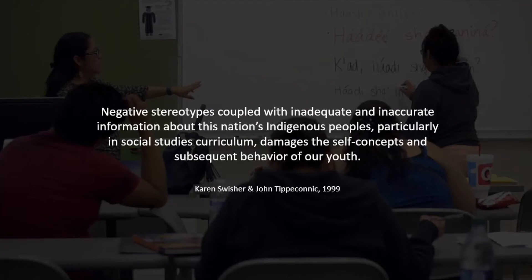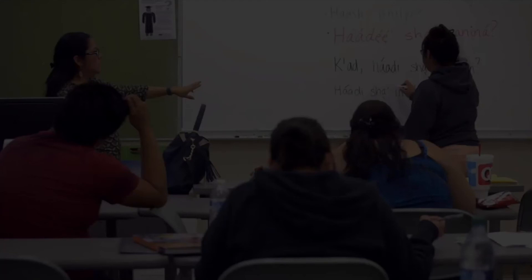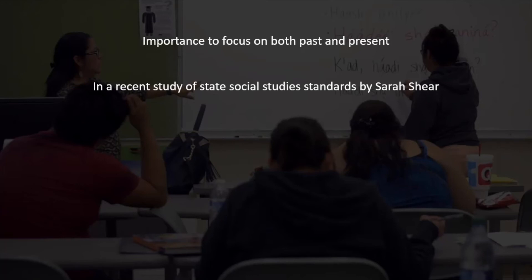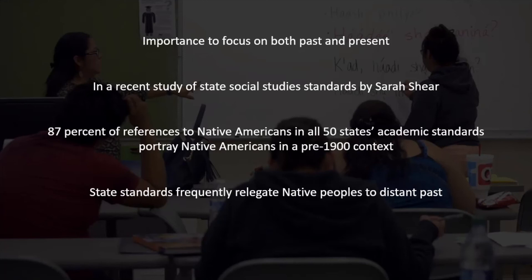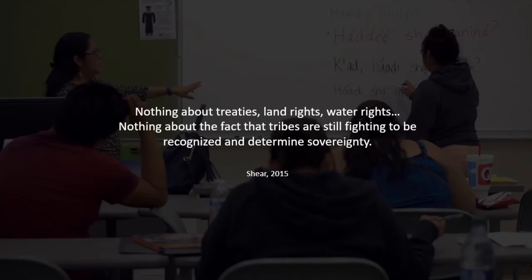Swisher and Tipiconic state that negative stereotypes coupled with inadequate and inaccurate information about this nation's indigenous peoples, particularly in social studies curriculum, damages the self-concepts and subsequent behavior of our youth. When teaching about Native Americans, it's important to focus on both the past and the present. In a recent study of state social studies standards by Sarah Scheer, she and her colleagues found that 87 percent of references to Native Americans in all 50 states' academic standards portray Native Americans in a pre-1900 context. This relegates the importance and presence of native peoples to a distant past. She found that all 50 states lack any reference to current native events or challenges. Scheer states there is nothing about treaties, land rights, water rights, nothing about the fact that tribes are still fighting to be recognized and determine sovereignty. As such, teachers and schools need to do the work to ensure that this is included in social studies curriculum.